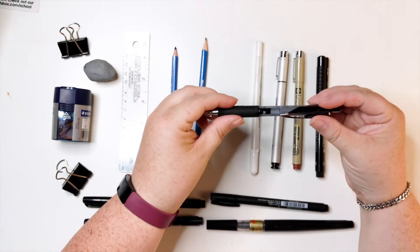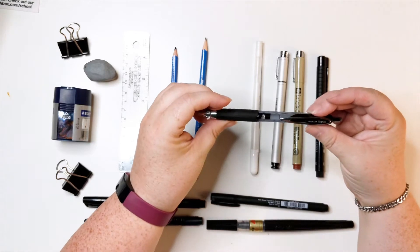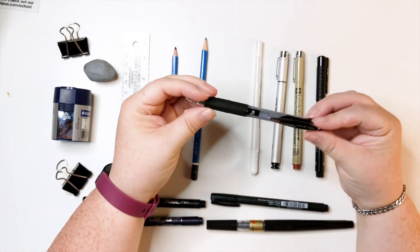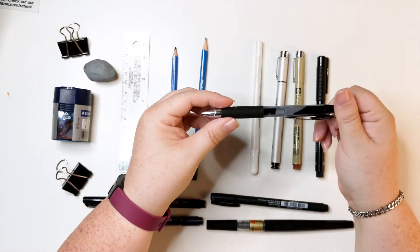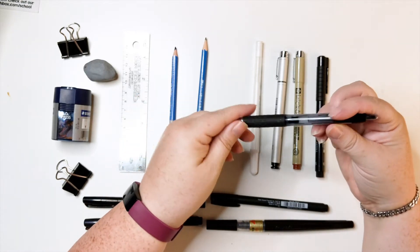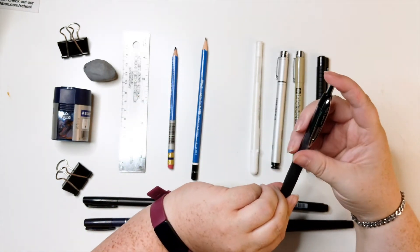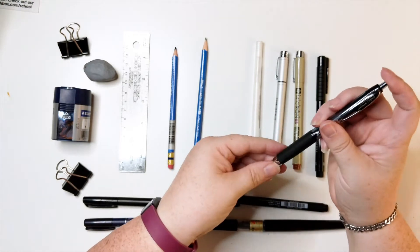I have, oh, what is this? Uniball Signo pen. These are just ones that I get from Walmart. I like these just for writing in my bullet journal.